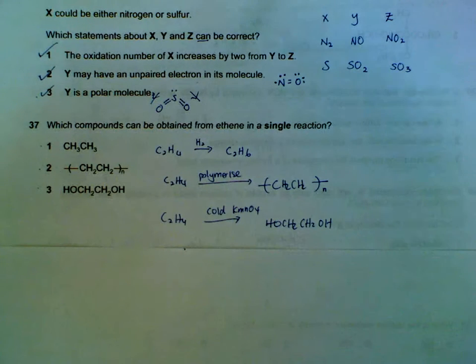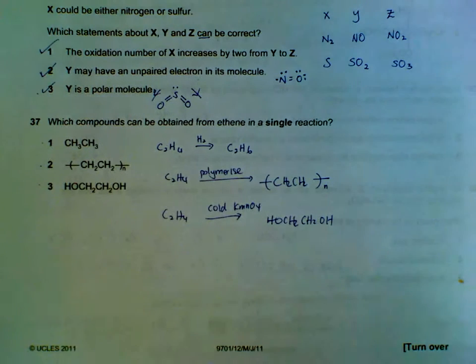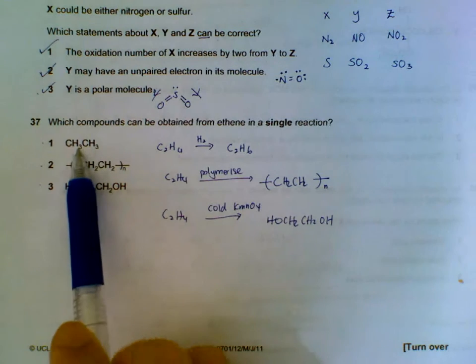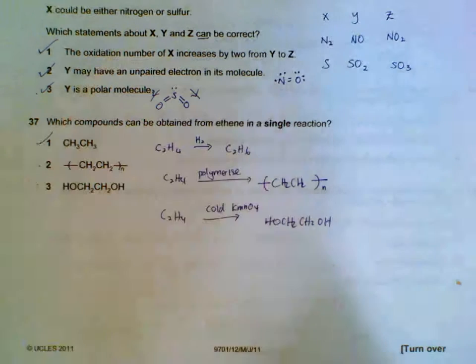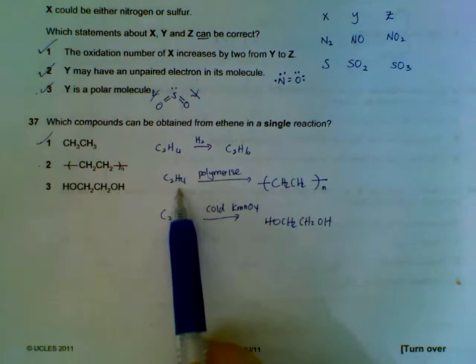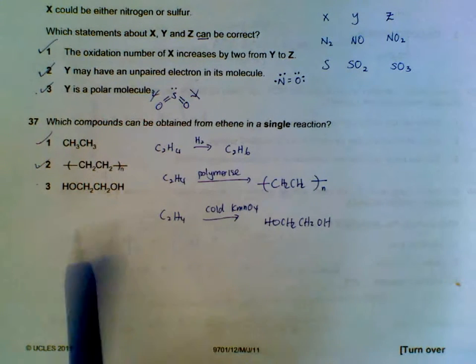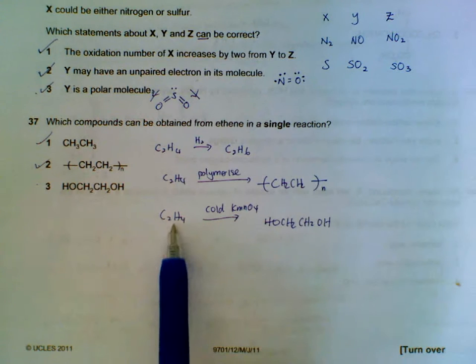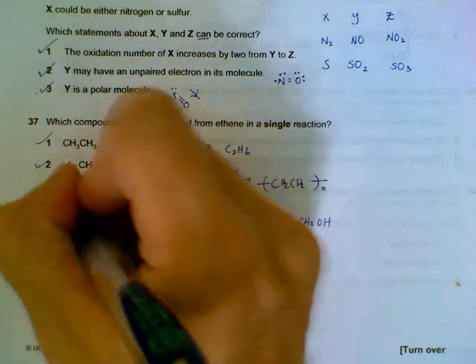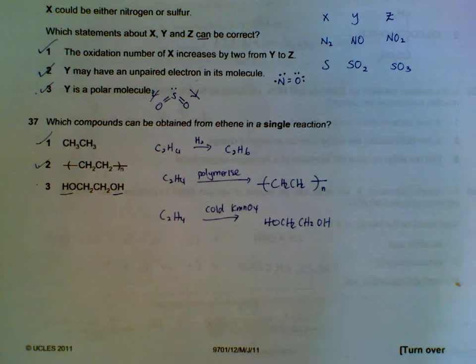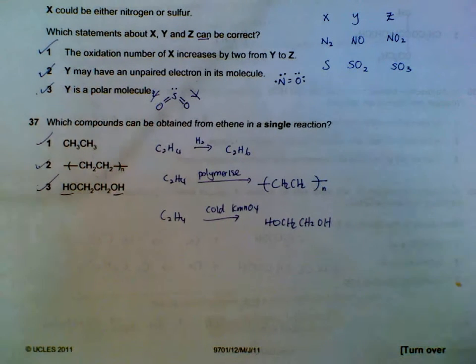37. Which one of the compounds can be obtained from ethene in a single reaction? So we can get ethane from ethene by hydrogenation. We can polymerize ethene to get polyethene which is this compound. And we can add cold KMnO4 which will add a diol, an OH to your carbons on either ends. So all three statements are correct.